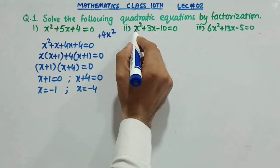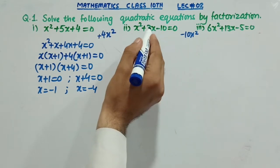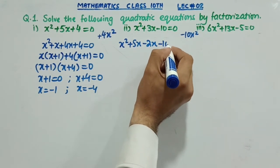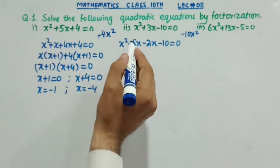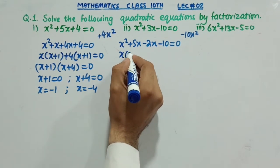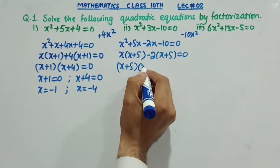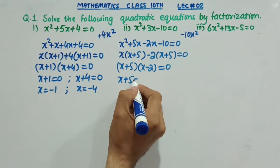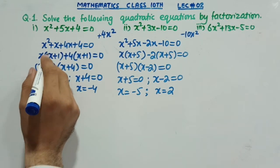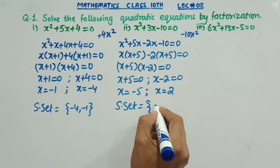The equation is x squared plus 3x minus 10 equals 0. We split the middle term: x squared plus 5x minus 2x minus 10 equals 0. Taking x common gives x(x plus 5), minus 2 common gives minus 2(x plus 5) equals 0. So (x plus 5)(x minus 2) equals 0. Therefore x equals minus 5 or x equals plus 2. The solution set is {minus 1, minus 4} and {minus 5, plus 2}.